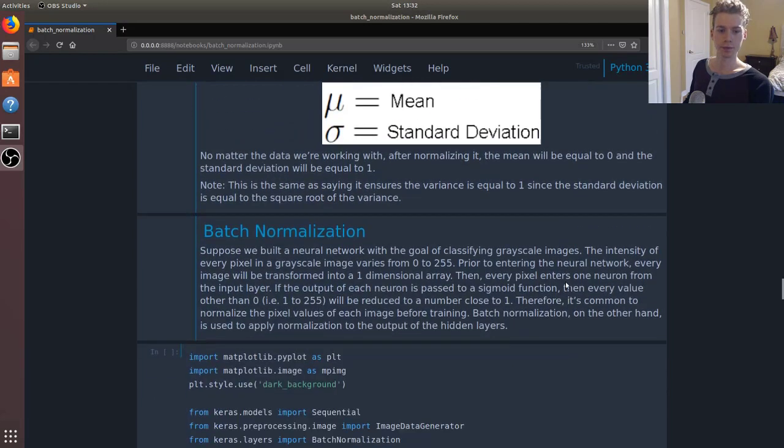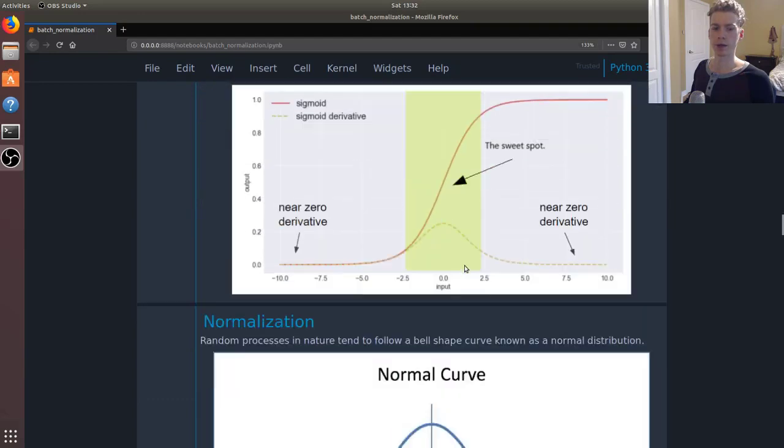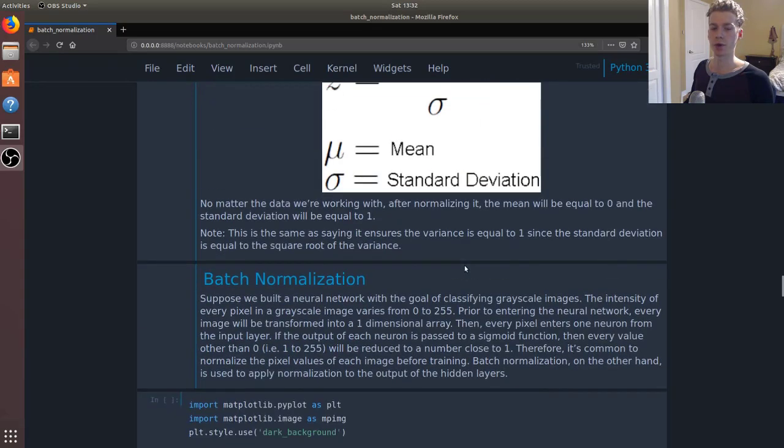In normalizing that, now the pixels only range from zero to one. Then we'll get the proper value here or we won't have the vanishing gradient problem.